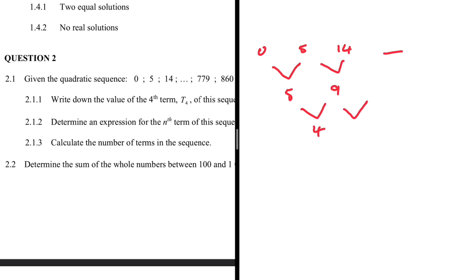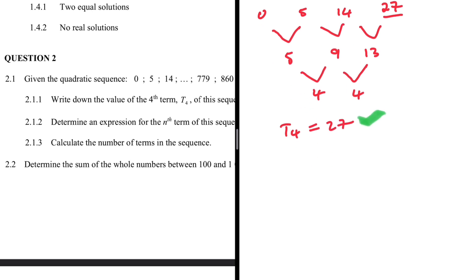9 plus 4 is 13, and in order for us to get t4 we need to add 13 to 14. So 14 plus 13 equals 27. Therefore t4 is equal to 27. That is 2.1.1. Let's take a look at 2.1.2.